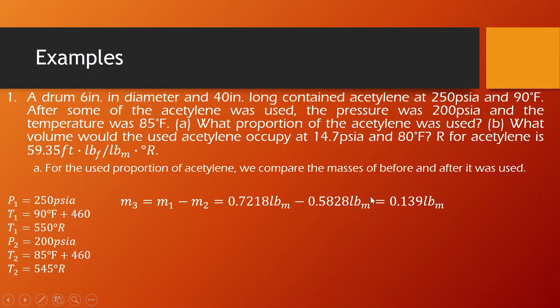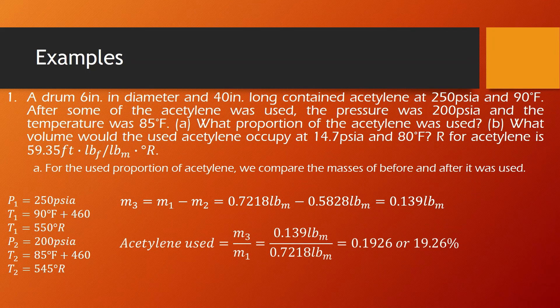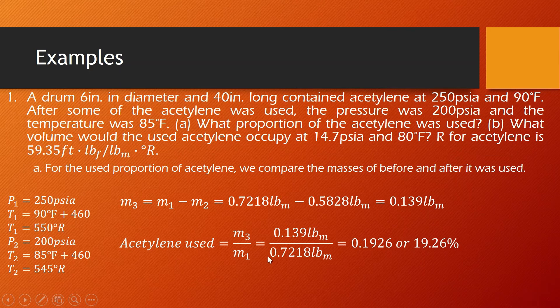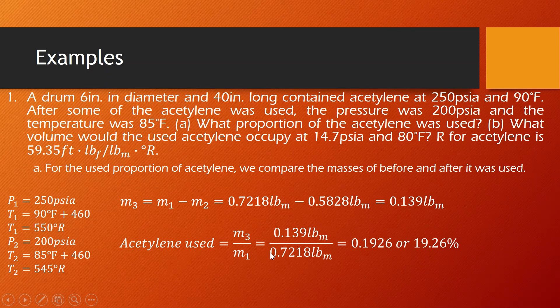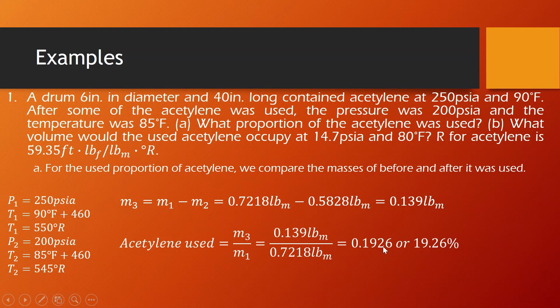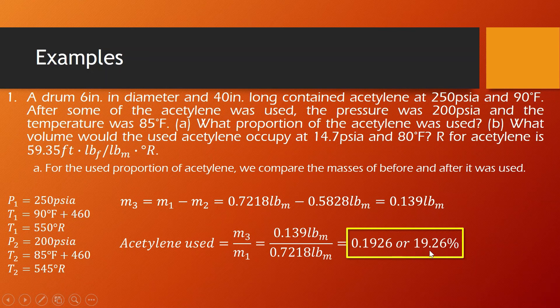In calculation for the proportion, we have to divide the masses, the used acetylene mass versus the original mass. So that is M3 over M1, or 0.139 divided by 0.7218, or that is 0.1926, or in percentage form times 100, that is 19.26%.